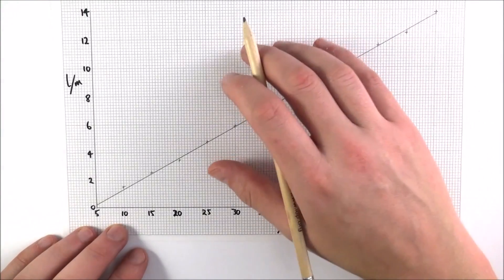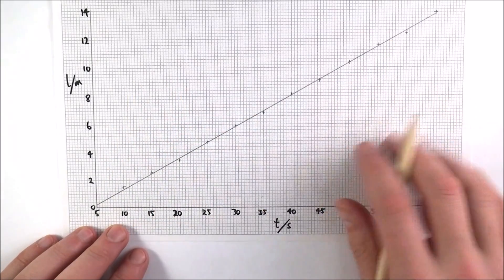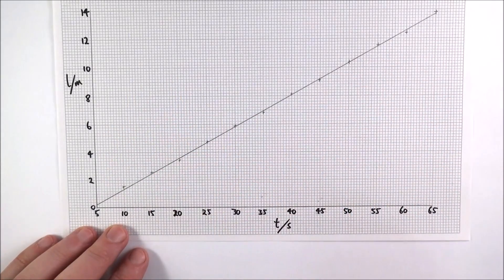Now perhaps we've carried out an experiment, we've taken some data and we've plotted it on a graph like this. So plenty of data points and a beautiful straight line that goes through it.